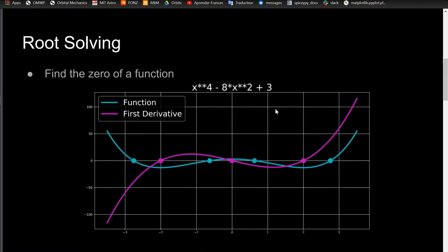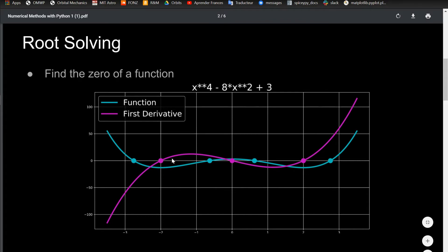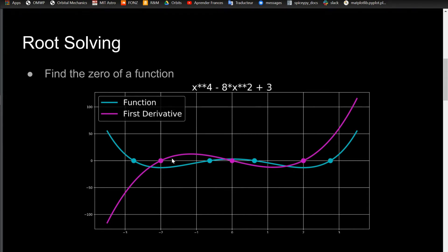Conceptually, what root solving is is just finding the zero of a function. In this example plot I have here is just an arbitrary polynomial, x to the fourth minus 8x squared plus 3, where it has four zeros, as you can see here in the plot. The whole point of root solving is to say, how can I numerically find these? Because a lot of the times, it's not a very simple function at all. This is just a very simple case in order to teach it to you.